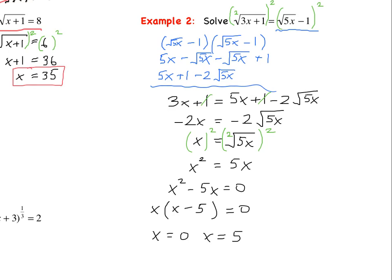We can't conclude that's our final answer until we verify by checking our work — we need to check both solutions. Checking x equals 0 in the original equation: the square root of 3 times 0 plus 1 equals 1, but the square root of 5 times 0 minus 1 equals the square root of negative 1. Positive 1 does not equal negative 1, so x equals 0 is an extraneous solution.